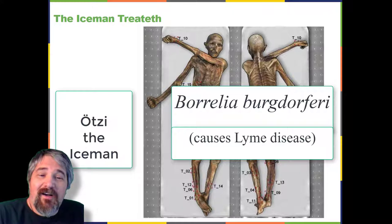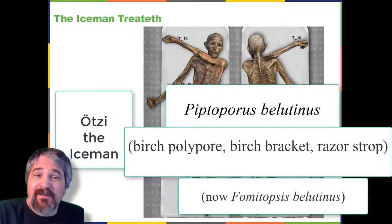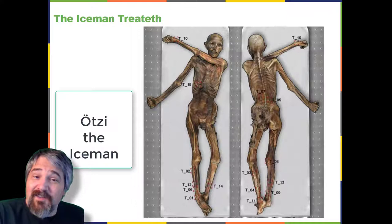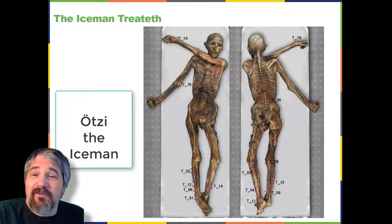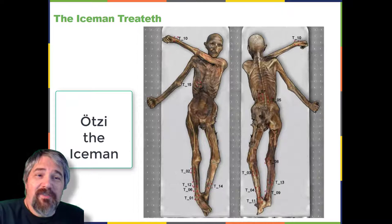Some researchers think Otzi may have been trying to treat his infections with the woody fruit of the Piptoporus betulinus fungus, which was discovered tied to his belongings. This fungus has both laxative and antibiotic properties. Otzi was also covered in tattoos made by cutting incisions into his skin, filling them with herbs, and then burning the herbs. There is speculation that this may have been another attempt to treat his health ailments.